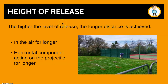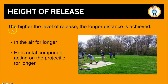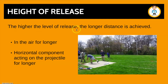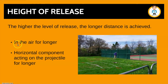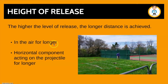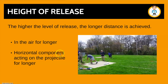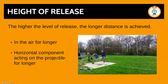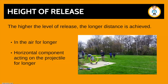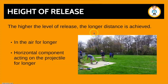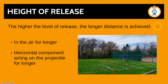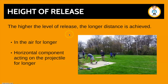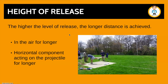Starting with height of release. Very simply, the higher the level of release, the longer distance is achieved — because the object is in the air for longer and therefore the horizontal component acting on the projectile is applied for longer. So if this athlete were on a 10-metre high diving platform and threw with the same force and angle, they would still gain more distance simply because the height of release was higher.